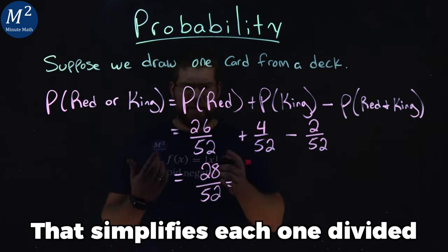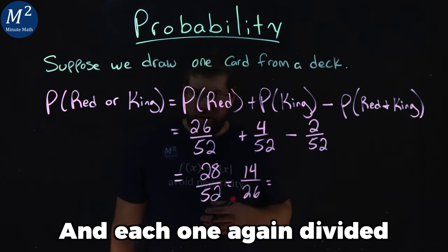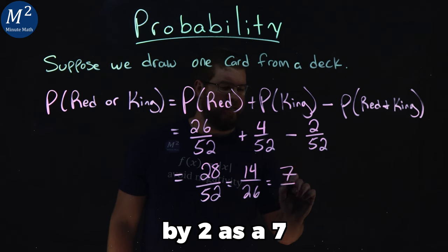That simplifies. Each one divided by 2 is 14 out of 26, and each one again divided by 2 is 7 out of 13.